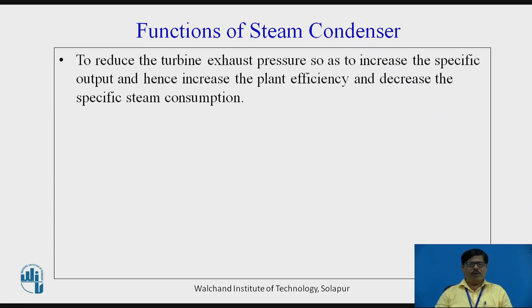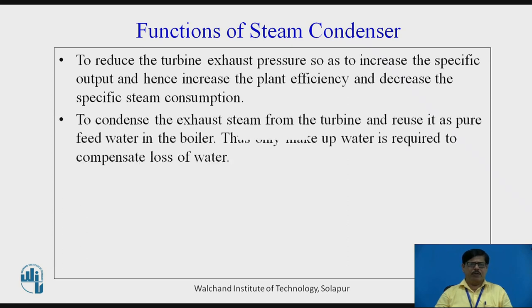It also gives the advantage that the amount of steam required to produce 1 kW of power will decrease. That is, for the same size of the plant, we will require less steam flow rate — the specific steam consumption will decrease when we use a steam condenser. Another function is to condense the exhaust steam from the turbine and to reuse it as pure feed water in the boiler. The exhaust steam is condensed back into water, which we call condensate. This condensate being pure, we can reuse it again and again as feed water in the boiler, only requiring makeup water to compensate for any losses.